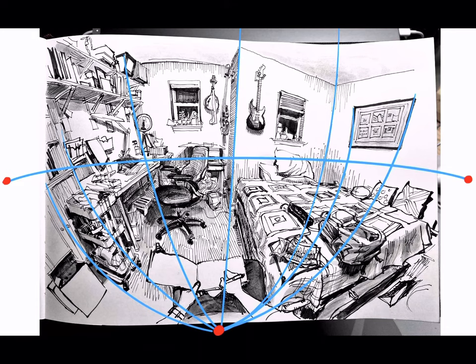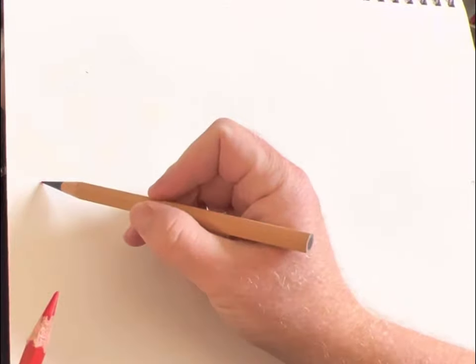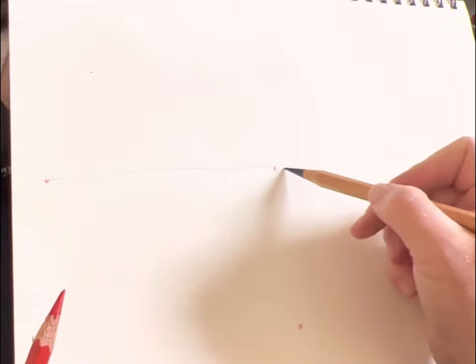I don't actually draw a grid when I make these, but here's how the grid would work. Similar to a five point grid, I draw the horizon, but this time rather than true horizontal, I make it a little convex.